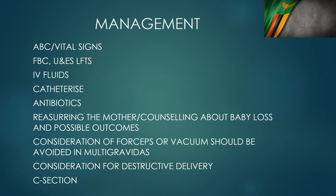How do we manage these patients? First, make sure we check the airway, breathing, and circulation, because these patients have been labouring for a long time — they are dehydrated, cachectic, and acidotic. Check vital signs because there's a big risk of uterine rupture. Check blood pressure, pulse, and respiratory rate. Take blood for full blood count — they may have haemoconcentration or anaemia if they've been bleeding. Check urea and electrolytes, liver function tests. Give IV fluids: normal saline, Ringer's lactate.